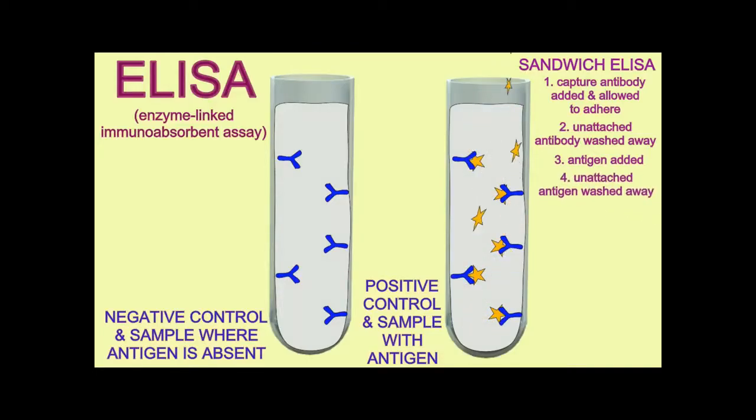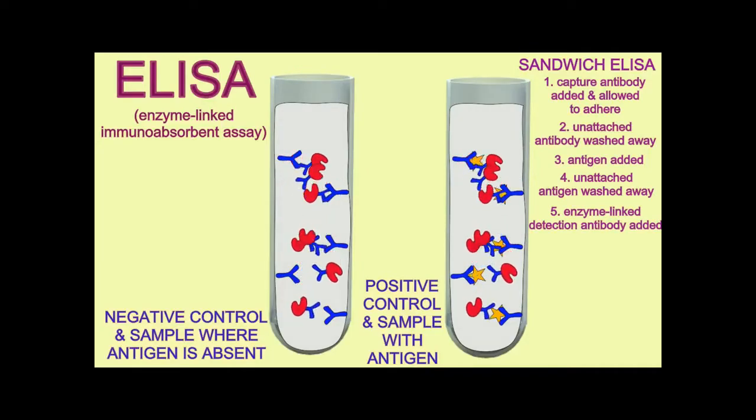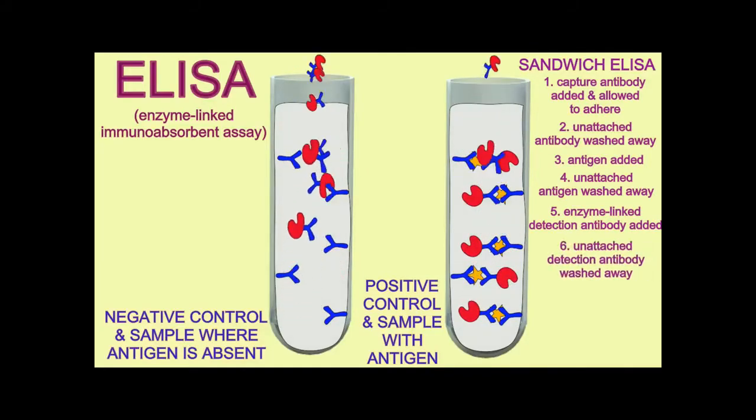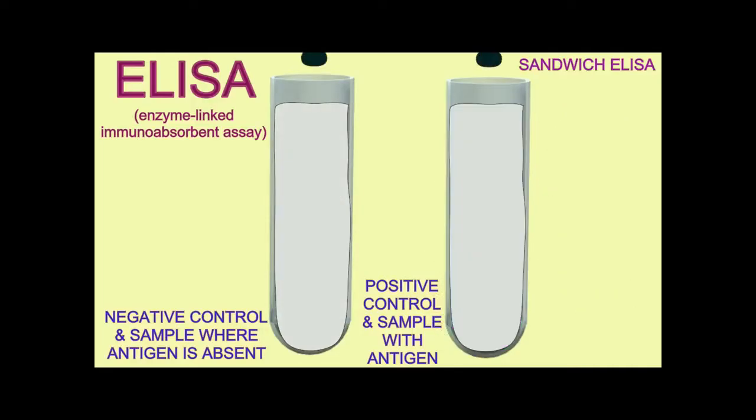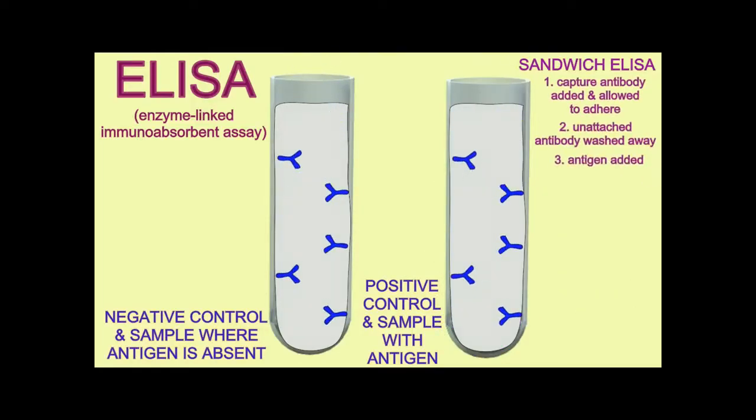If the antibodies are attached to a specific enzyme, a color molecule, a chromogen, could be added. If a patient's sample had coronavirus antigen in it, the antibodies would have stuck, the chromogen reacts with the enzyme and there is a color change.